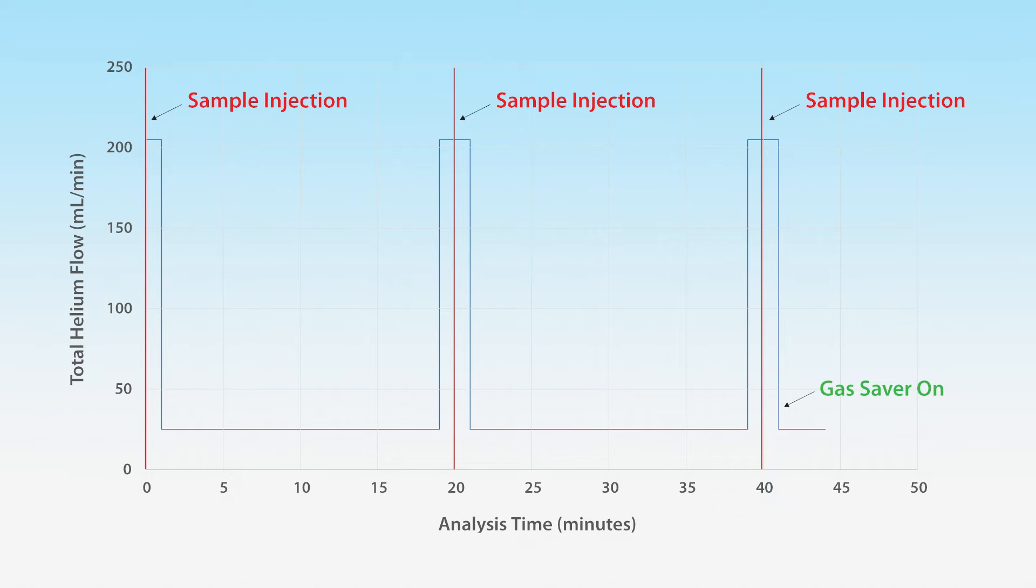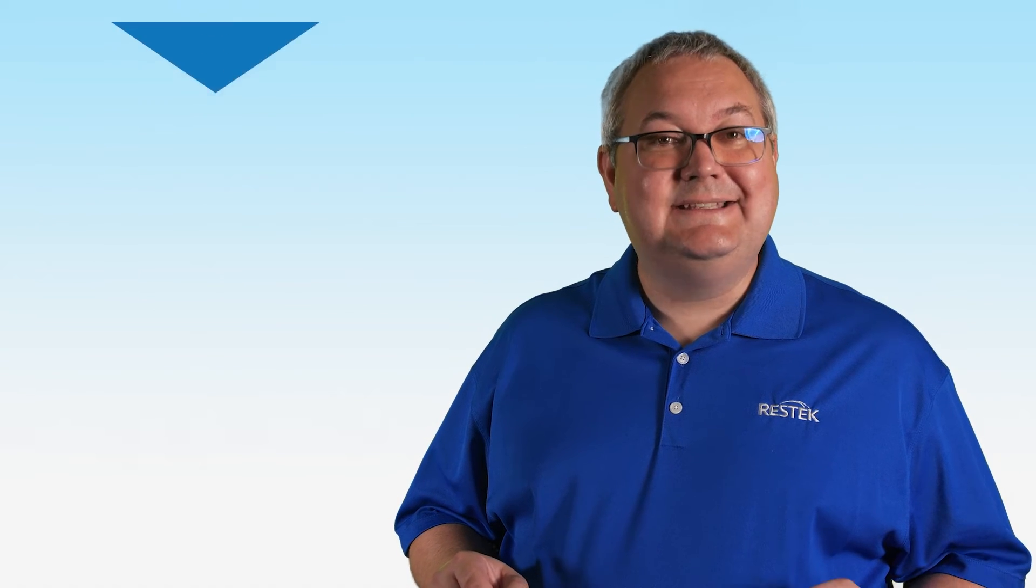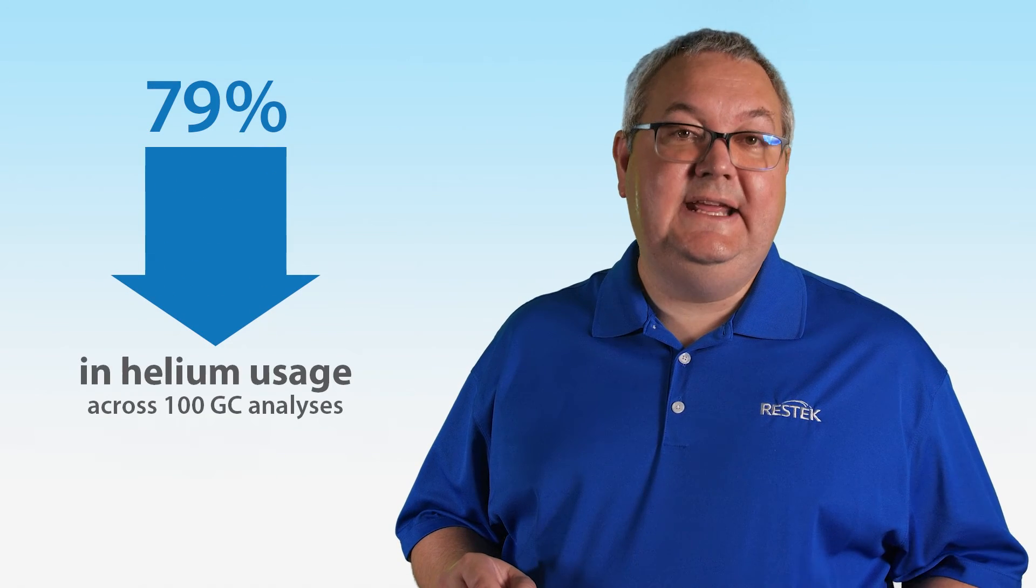Gas Saver Mode will then shut off prior to the next injection. Using our scenario as a guide, you would see a 79% decrease in helium usage across just 100 analyses. Check with your GC manufacturer to see how to use Gas Saver Mode on your instrument.